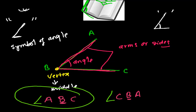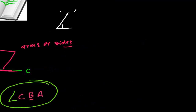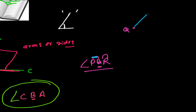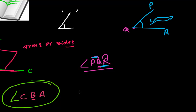So angle ABC and angle CBA both represent the same angle. Now suppose you see angle PQR — that means there is an angle where Q is the vertex, and PQ and QR are the sides or arms. So Q is the vertex, PQ is one arm going toward P, and QR is another arm going toward R.